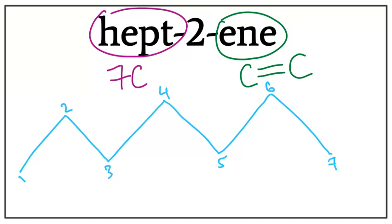We know that there is a double bond. This two here tells us the location of the double bond. It is the second carbon. The double bond starts at the second carbon, and it is between the second and the third carbon.